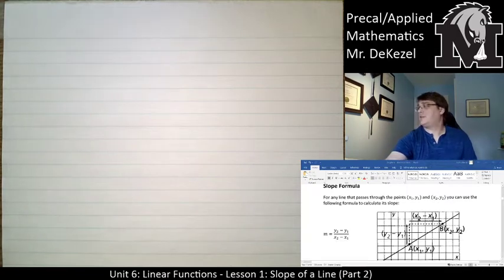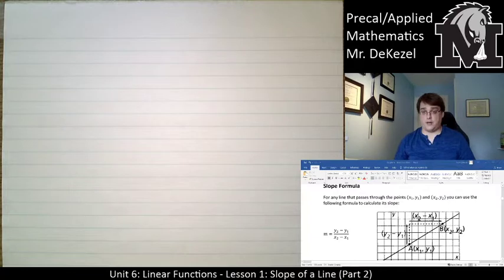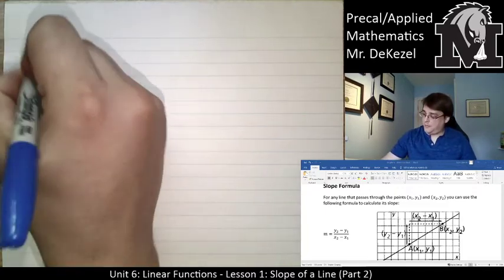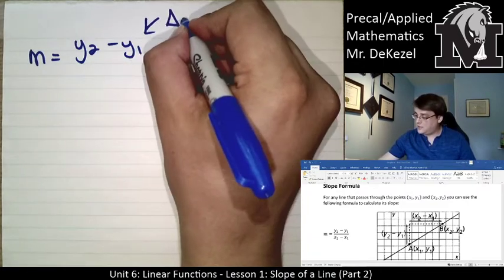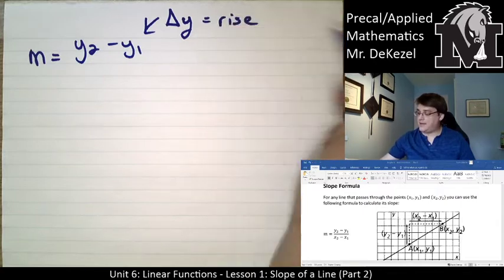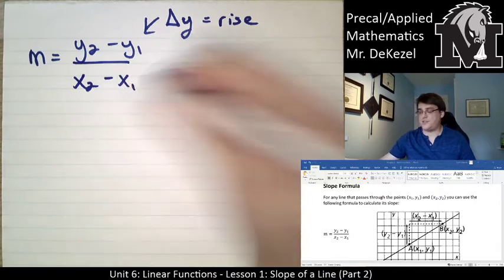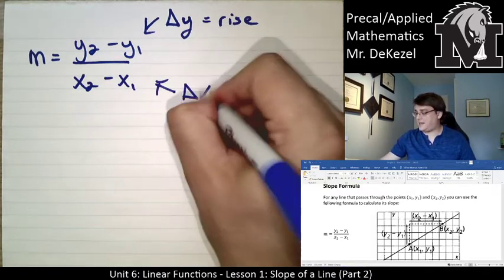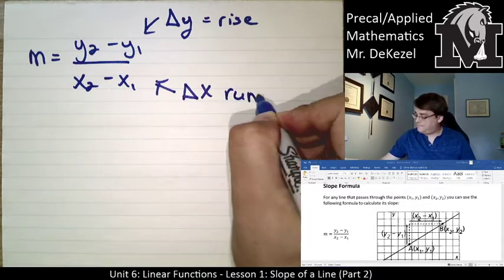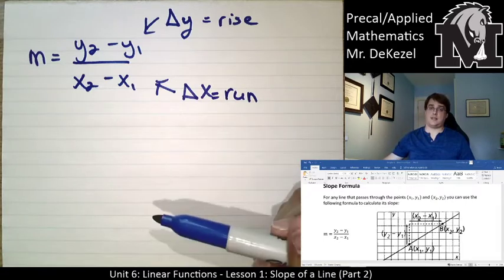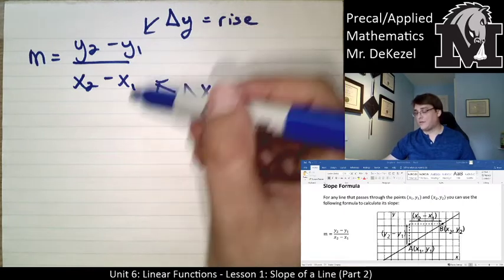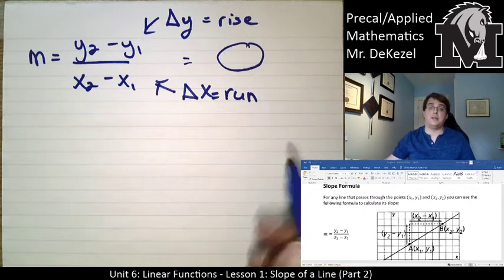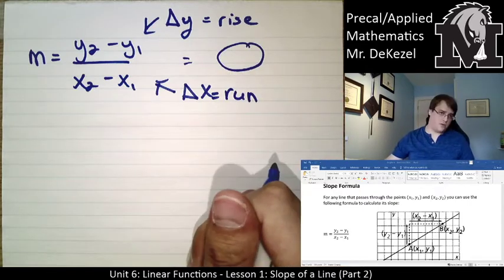So, if we have any line that passes through the points x1, y1, and x2, y2, so any two points, you can use the following formula to calculate the slope. m is slope, so m equals y2 minus y1. So, this is still the rise. Remember, the change in the y-axis, that is the rise, divided by the second x-point, subtract the first x-point, x2 minus x1. That is delta x, the change in the x-value, the run. So, this formula is something that is new, but we've done it by counting already. We've already counted the difference between y2 and y1, and we've counted the difference between x2 and x1. Now, we're just going to define each point 1 and 2, and then plug it into our formula.